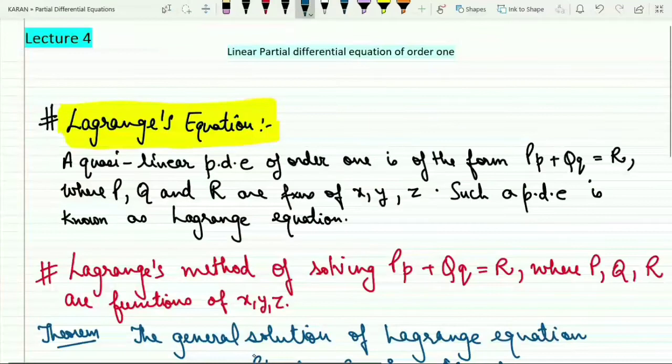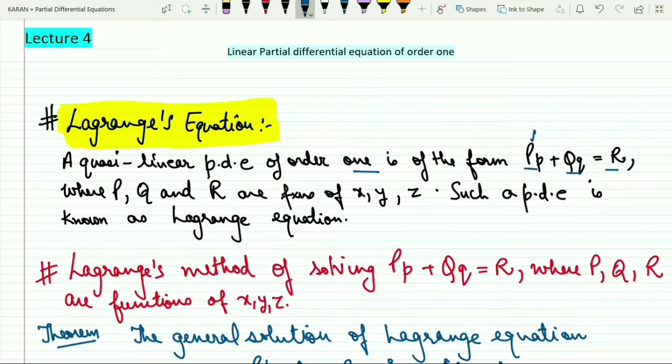For this I will be considering what is Lagrange's equation. Lagrange's equation definition: it is a quasi-linear partial differential equation which is of order 1 and of the form pp plus qq equals to R, where P, Q, and R are the functions of x, y and z. Such a partial differential equation is known as a Lagrange's equation.